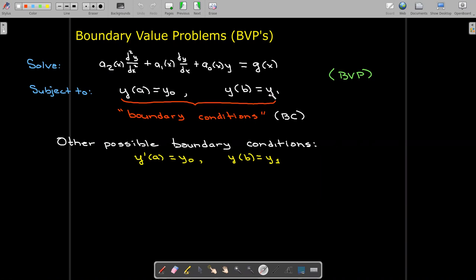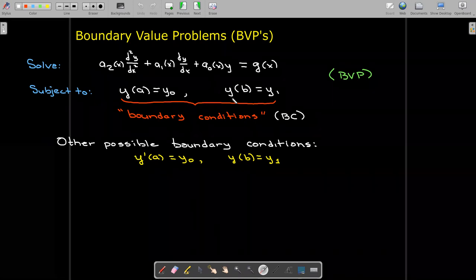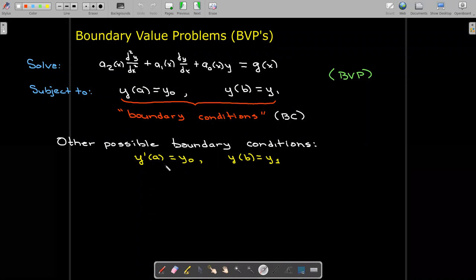Now there's other possible boundary conditions. It's a second order differential equation, so the boundary conditions could involve either the function itself, the solution function, or its first derivative at a or b. So the way we wrote this, it was just the function at both end points.